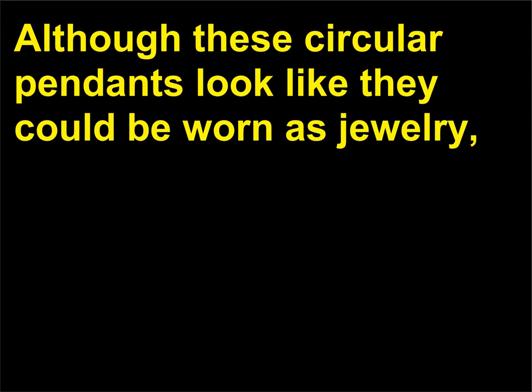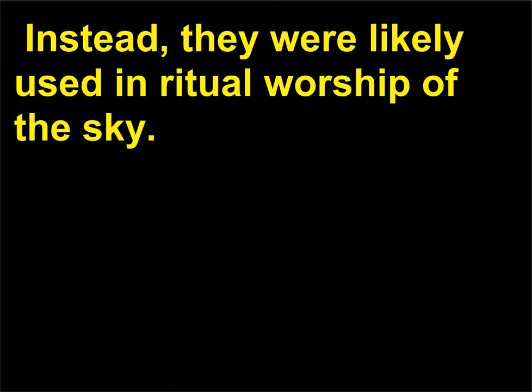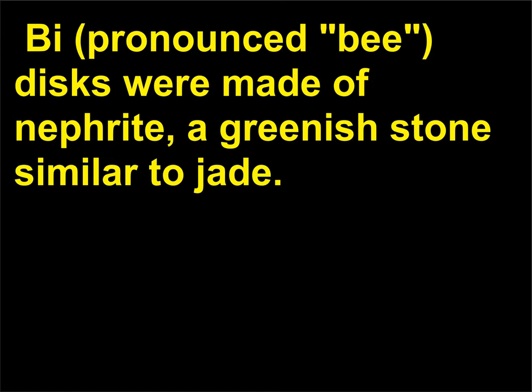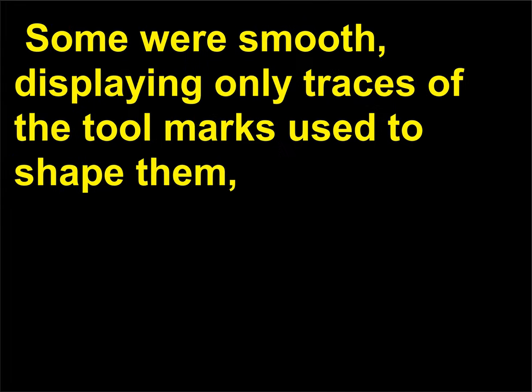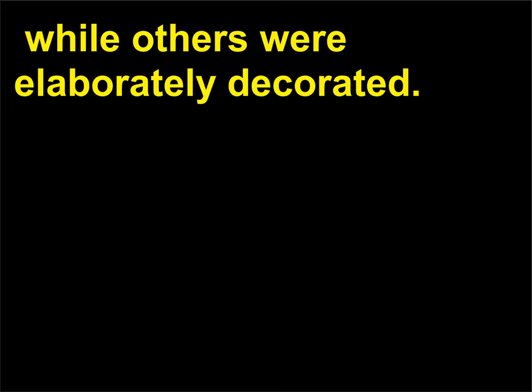What is a bi-disc? Although these circular pendants look like they could be worn as jewelry, they are much too bulky and heavy for such a purpose. Instead, they were likely used in ritual worship of the sky. Bi discs were made of nephrite, a greenish stone similar to jade. Some were smooth, displaying only traces of the tool marks used to shape them, while others were elaborately decorated.